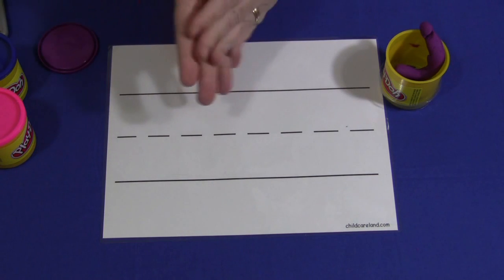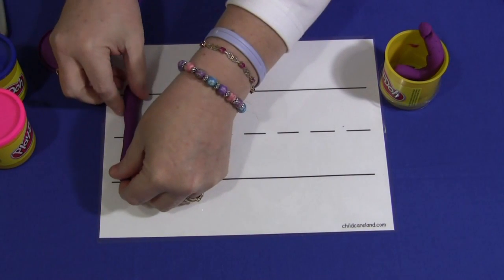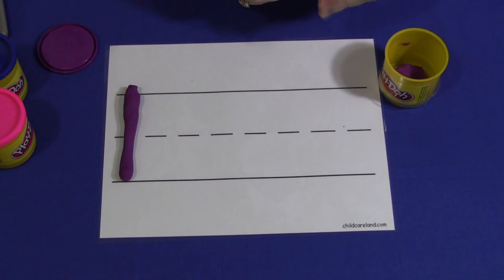They'd roll it into a worm shape and then they could make whatever letters they want out of it or you could have cards made up with the letters of the alphabet or sight word cards.